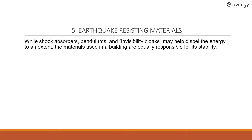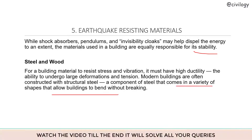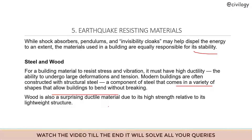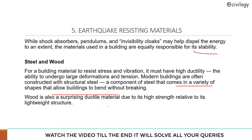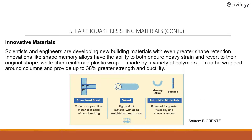While shock absorbers, pendulums, and invisibility cloaks help dispel energy, the materials used in a building are equally responsible for its stability. For a building material to resist stress and vibration, it must have high ductility. Modern steel components come in a wide variety of shapes that allow buildings to bend without breaking. Wood is also a surprisingly ductile material due to its high strength relative to its lightweight structure.